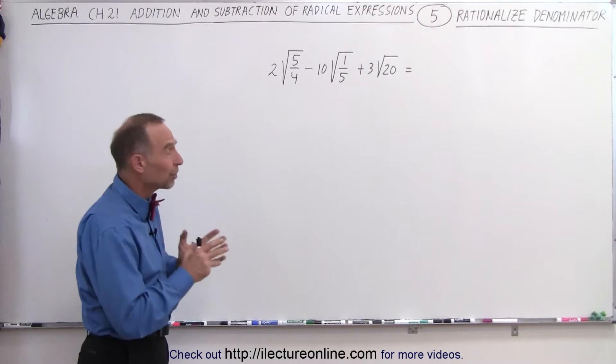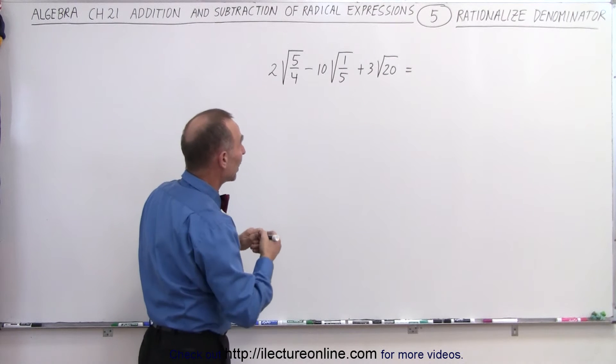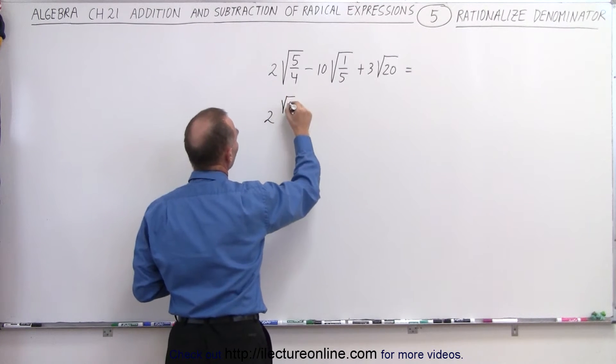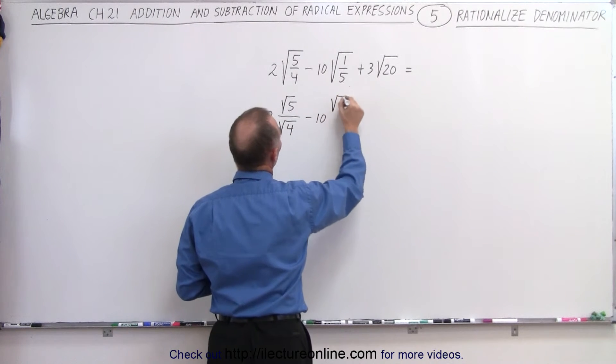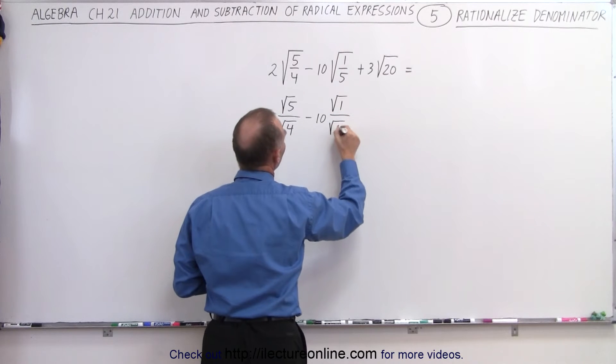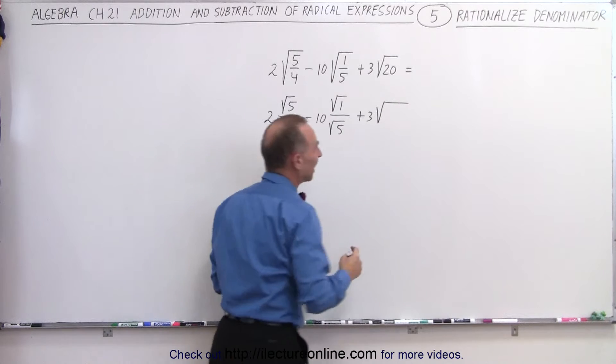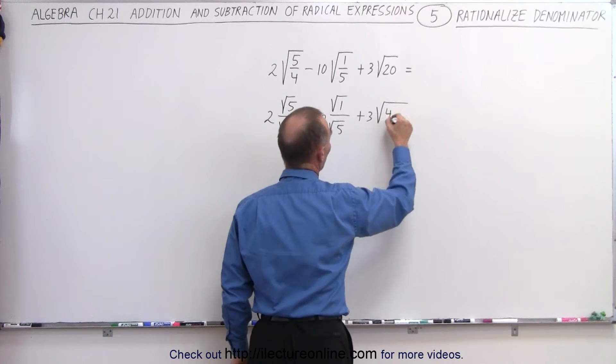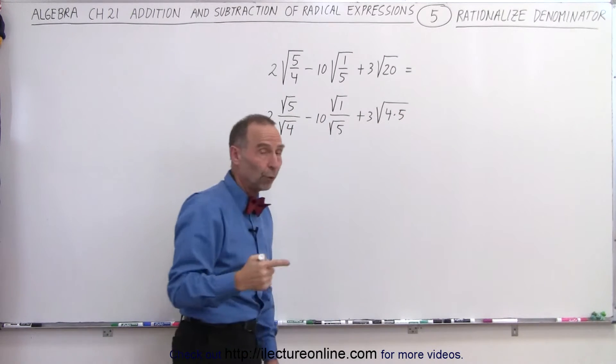The first thing we probably should do is separate the numerators from the denominators and rewrite it like that. So this can be written as 2 times the square root of 5 divided by the square root of 4 minus 10 times the square root of 1 divided by the square root of 5 plus 3 times the square root of... And now, in the case of the square root of 20, you might want to write it as 4 times 5 because you can indeed take the square root of 4.